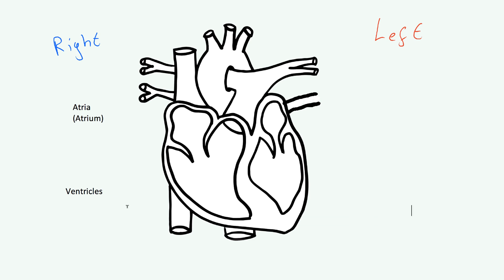They're named simply by looking at which side of the heart they're on. This one here is called the right atrium, this one is the left atrium, this one is the right ventricle, and this one is the left ventricle.